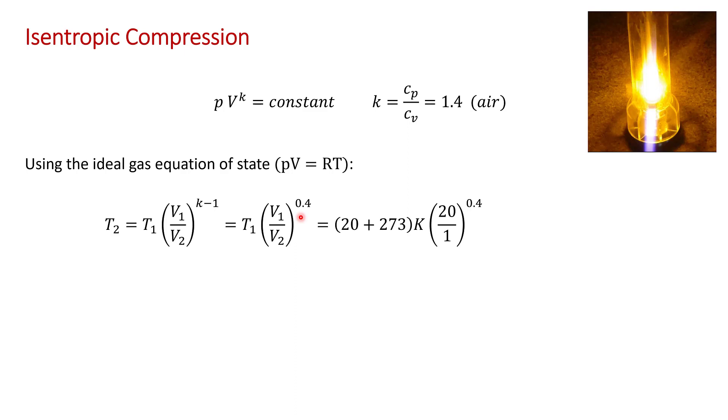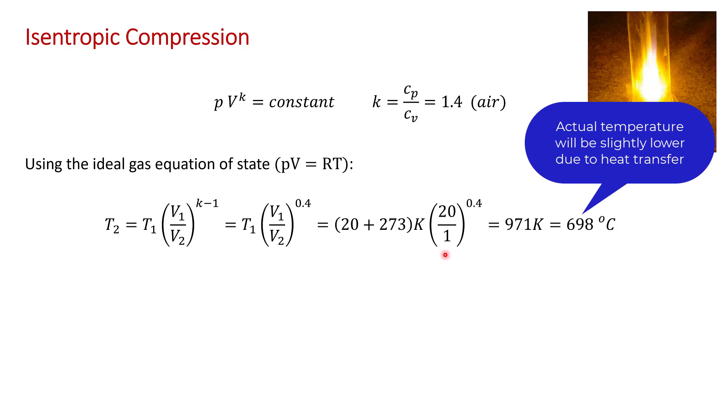If we use an initial temperature of 20 degrees C, then T1 is 293 Kelvin. You have to convert it to Kelvin because all of these equations are based on the ideal gas equation of state. So we take 293 Kelvin times the compression ratio raised to the power of 0.4 and that gives 971 Kelvin or almost 700 degrees Celsius for adiabatic compression.